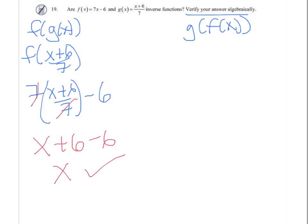Now doing g of f, that's going to be 7x minus 6 plus 6 all over 7. We take this whole function and replace it in for this x, which is how I got this numerator. And now negative 6 plus 6 is 0, and we get x.